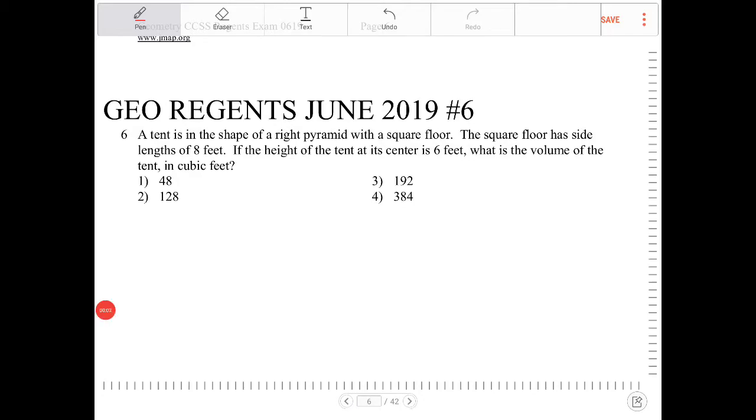A tent is in the shape of a right pyramid with a square floor. The square floor has side lengths of eight feet. If the height of the tent at its center is six feet, what is the volume of the tent in cubic feet?